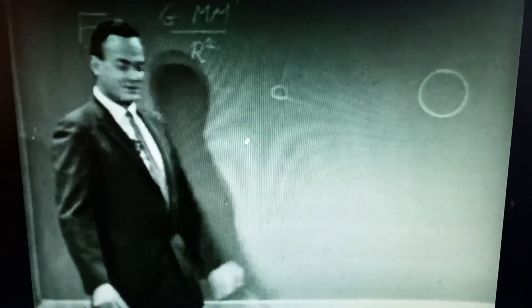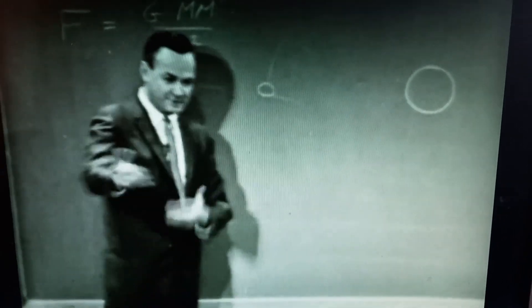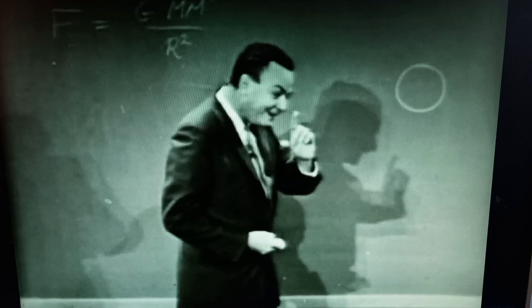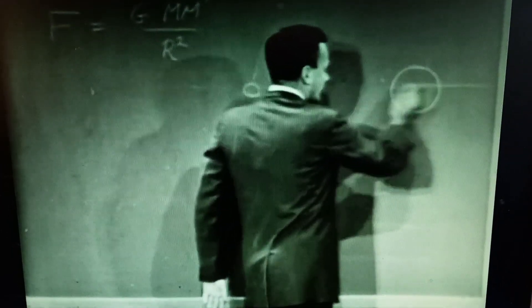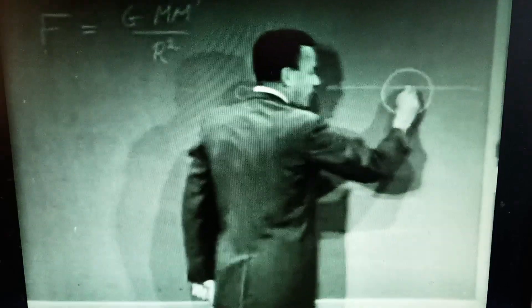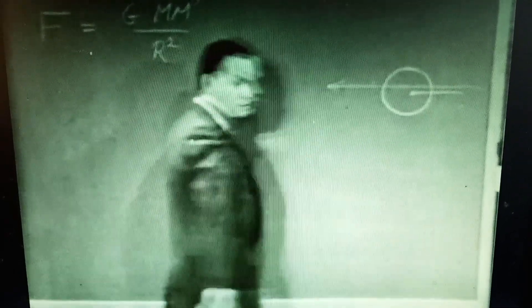However, when the sun is here, the particles which are coming in this direction are partly absorbed by the sun because some of them hit the sun and don't go through.